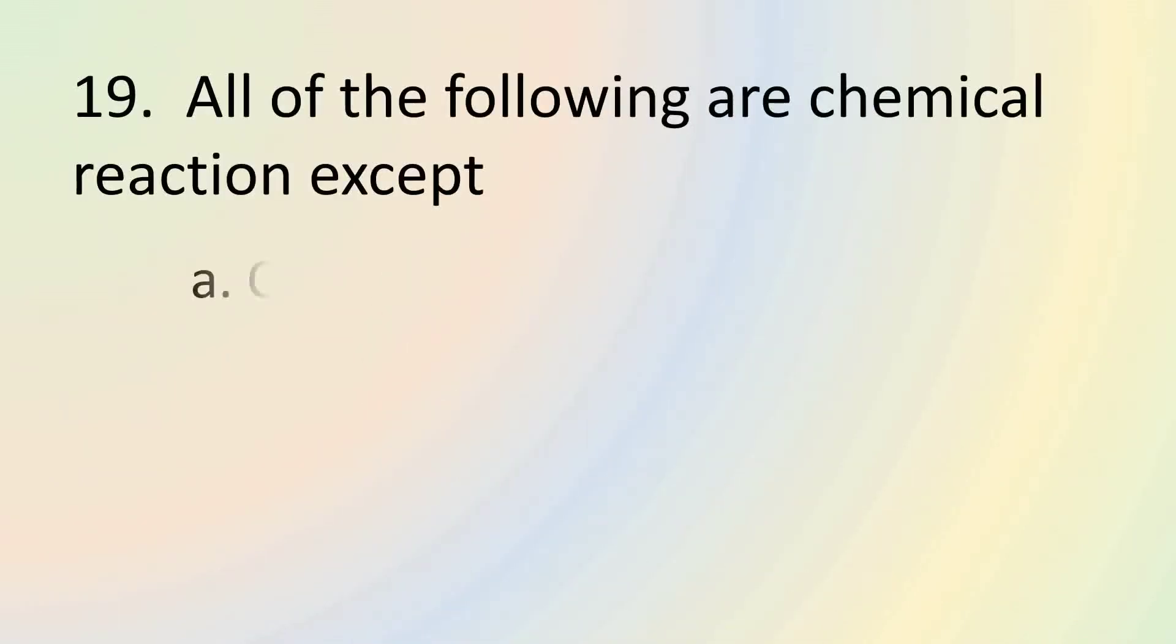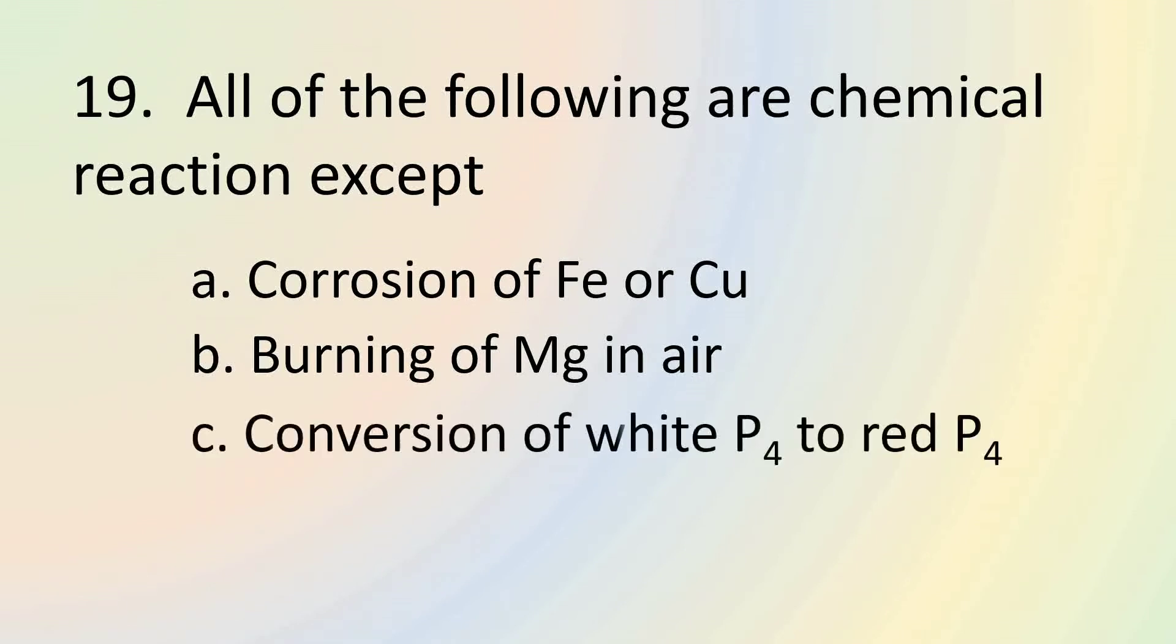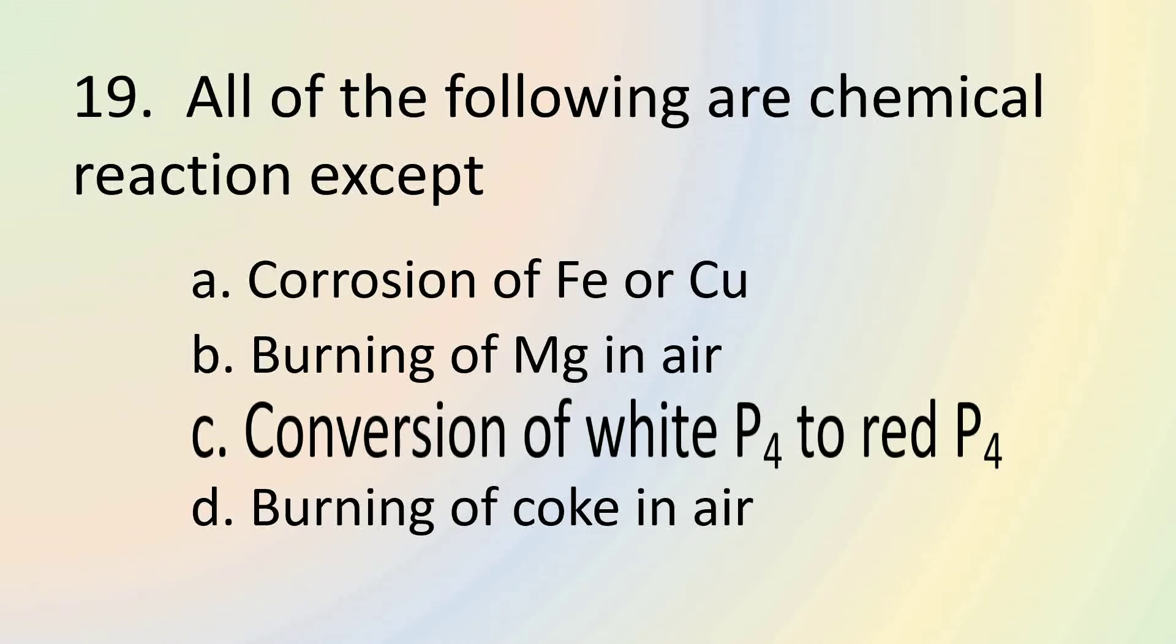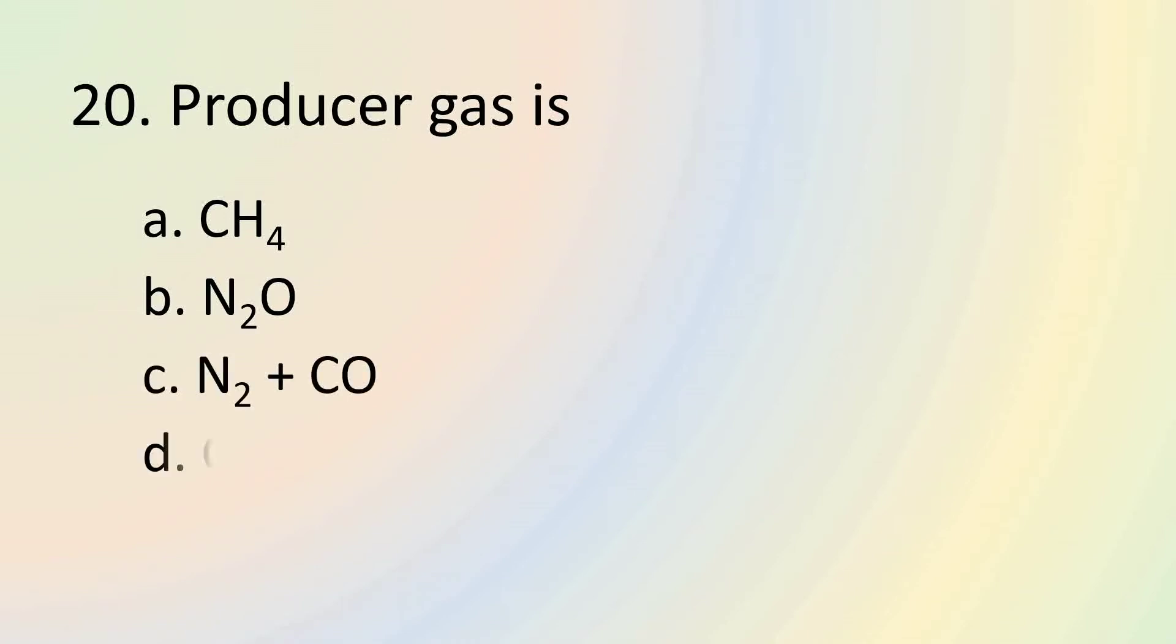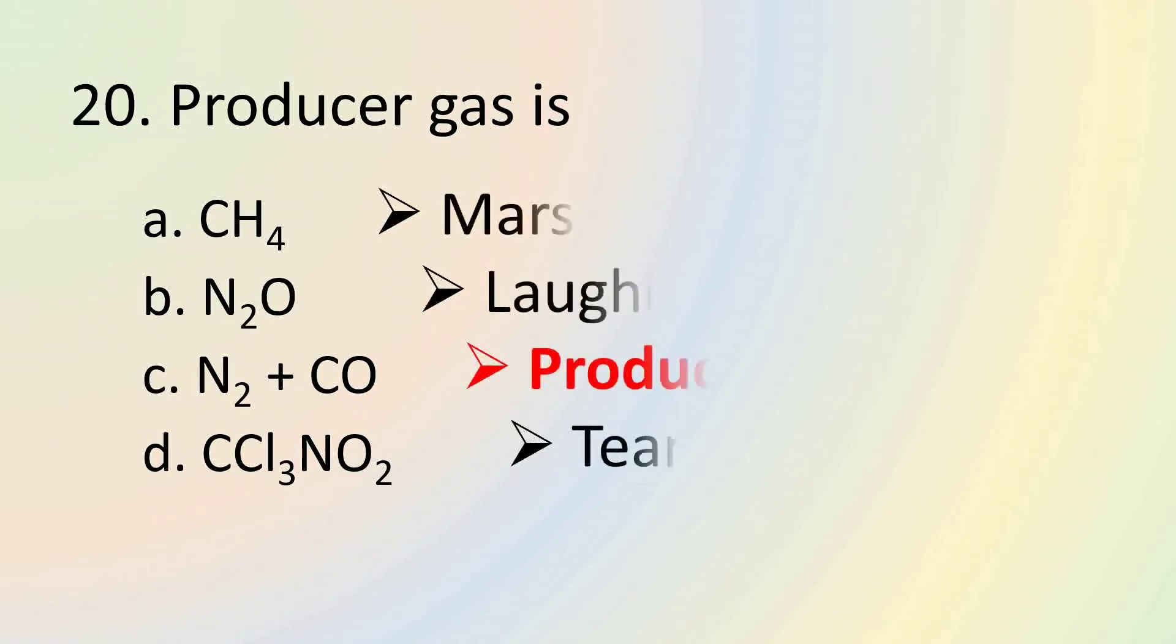All of the following are chemical reactions except conversion of white phosphorus to red phosphorus. Corrosion of iron or copper, burning of magnesium in air and burning of coke in air are examples of chemical reactions. Question number 20 asks us the molecular formula of producer gas. The molecular formula of producer gas is N2 plus CO. CH4 is the molecular formula of marsh gas. N2O is the molecular formula of laughing gas, and CCl3NO2 is the molecular formula of tear gas.